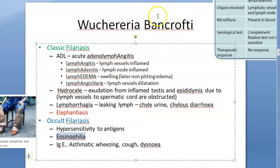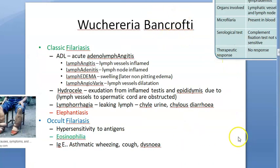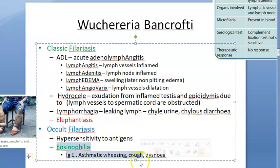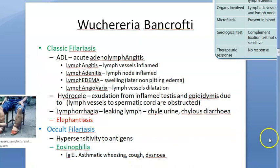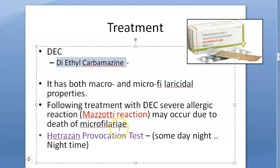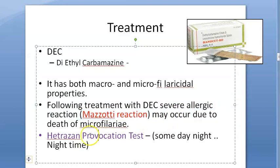In tropical pulmonary eosinophilia, patients will have elevated IgE, asthmatic wheezing, cough, and dyspnea. Treatment is with diethylcarbamazine. Following DEC treatment, patients can have a Mazzotti reaction due to the death of microfilaria — just remember this Mazzotti reaction.